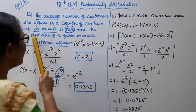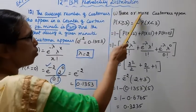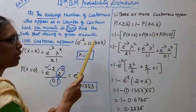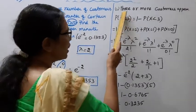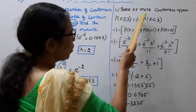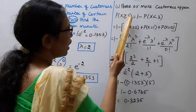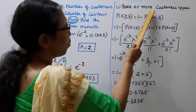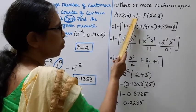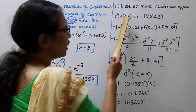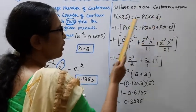The probability that during a given minute, 3 or more customers come is P(X ≥ 3) = 1 − P(X < 3), which means 1 minus the sum of P(X = 0), P(X = 1), and P(X = 2).